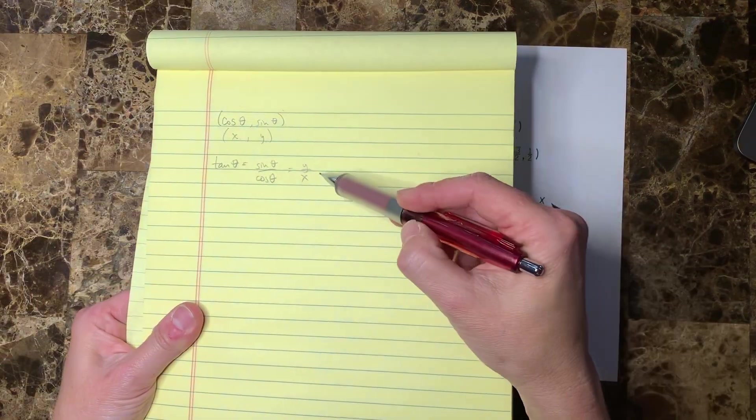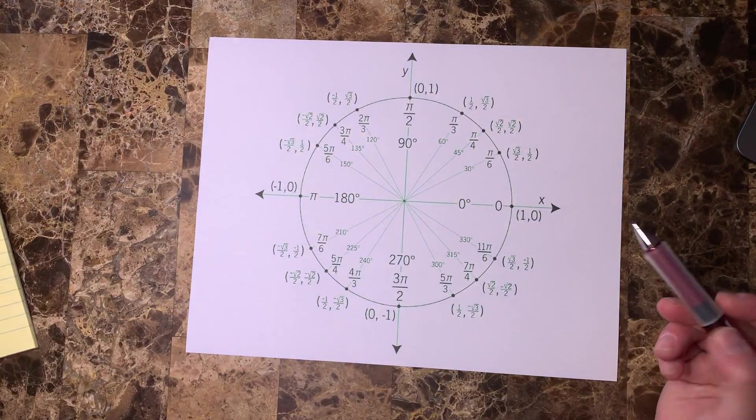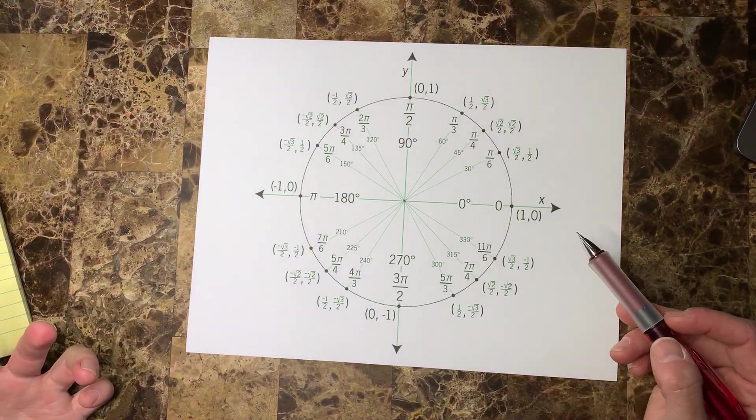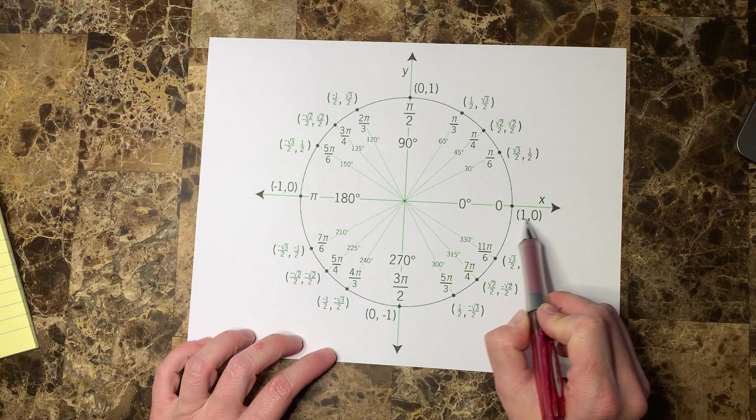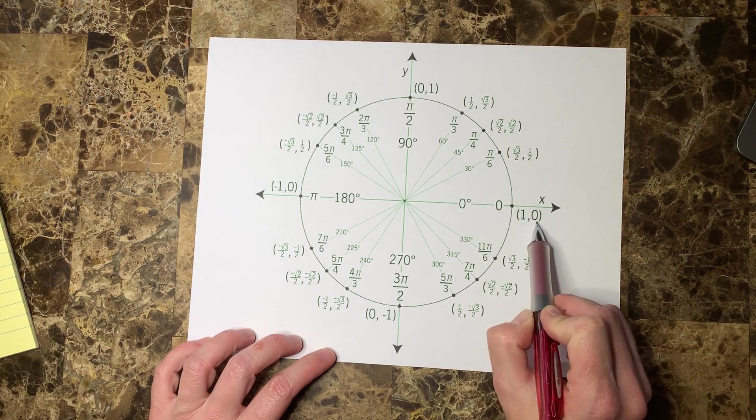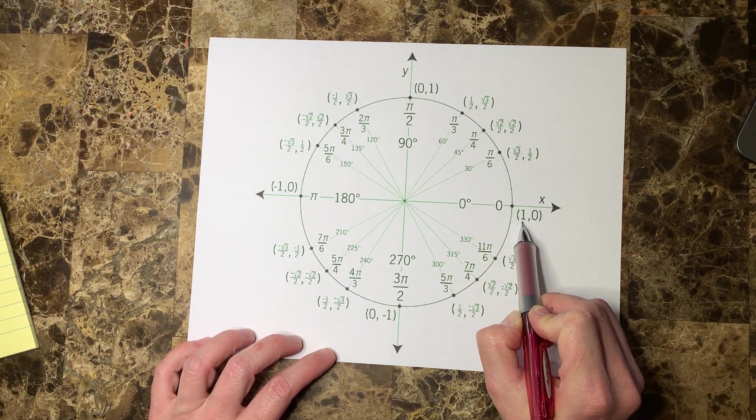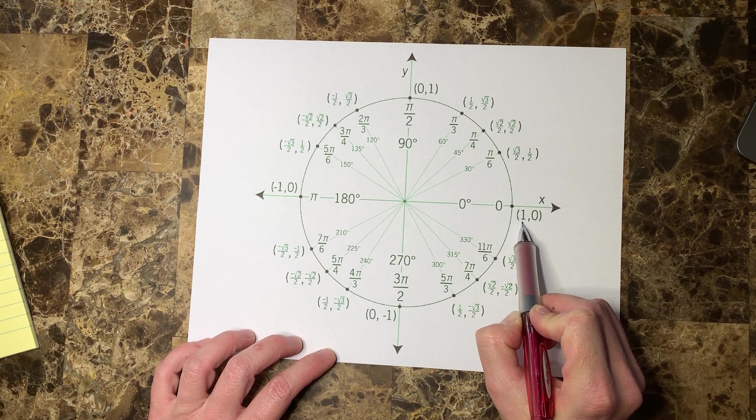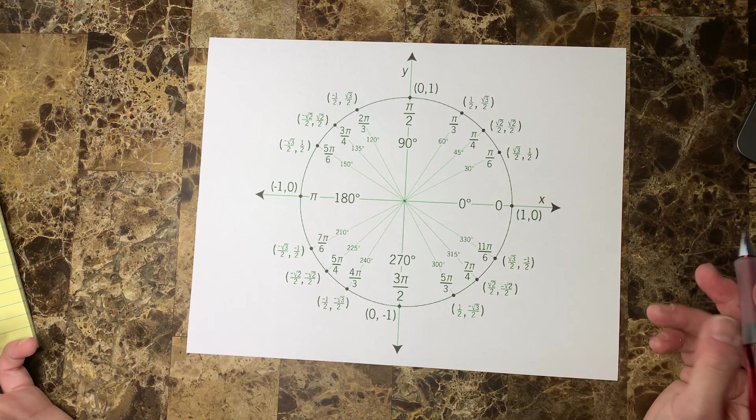If I asked you for the tangent, which is just the y over the x, let's say I asked you for the tangent of zero degrees. Here's zero degrees, this is the location, the y value over the x value would be zero.